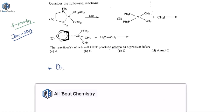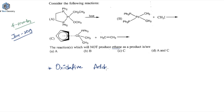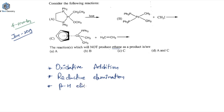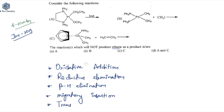Basically you need to know oxidative addition, reductive elimination, beta hydride elimination, migratory insertion, and transmethylation — although transmethylation would not be used here. So these are some basic reaction mechanisms of organometallic compounds which you should know.